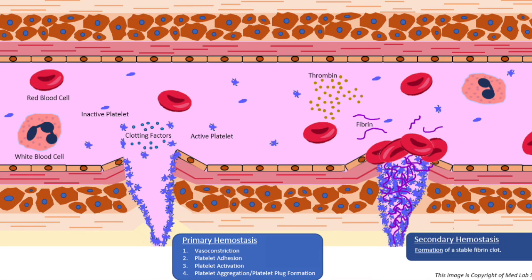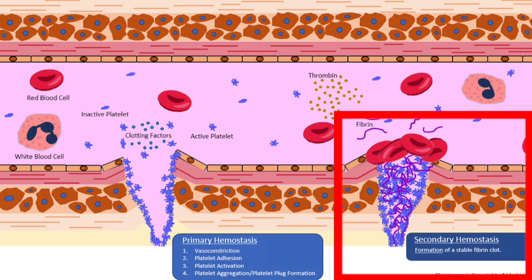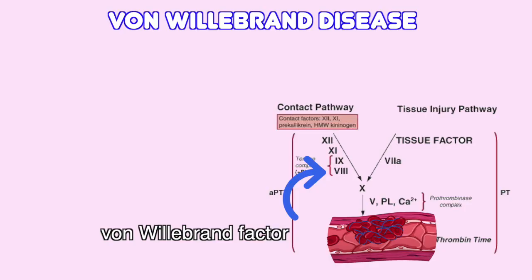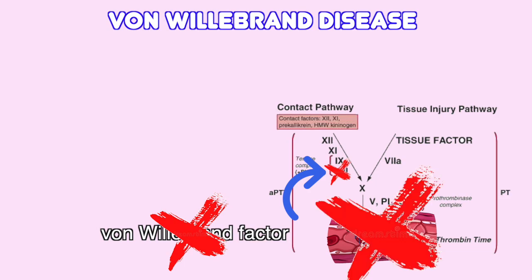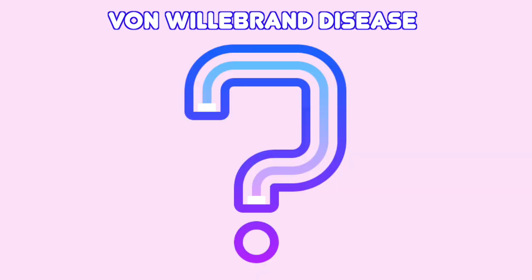The problem is in secondary hemostasis, when coagulation factors are released from the blood clot. Of course, if von Willebrand's factor is not transported, neither is factor VIII, and therefore the following steps for clot formation do not occur.